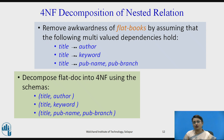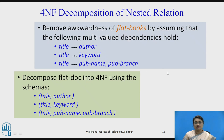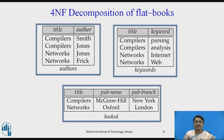Now let us convert to 4NF. We decompose the nested relation into 4NF — fourth normal form. The flat books (1NF version) is assumed to have multivalued dependencies: title → author, title → keyword, and title → (publisher name, branch). According to these, we decompose the table into multiple relations: an Authors relation, a Keywords relation, and a Books relation. This is called 4NF decomposition.